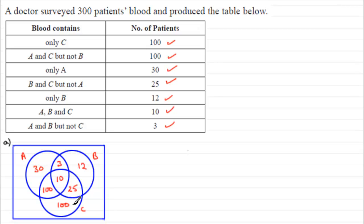So that's going to mean that there's 20 that are left over that don't have the substances A, B and C in their blood. So we need to put that 20 there. Okay. Well, that's the first part then.